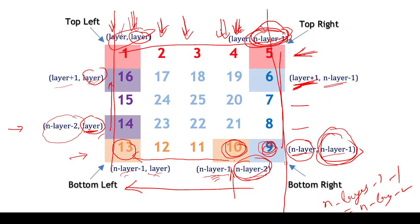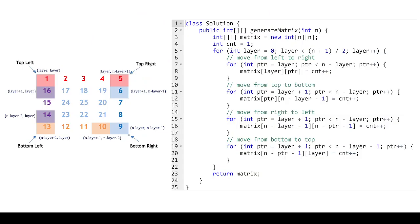When going upward in direction 4, the column stays the same (which is 'layer'), and the row decrements each time. For a 3-row matrix we go from row 3 to row 2, and in a 5-row matrix similarly. If you have any doubts, please comment below. Now let's come back to the implementation.